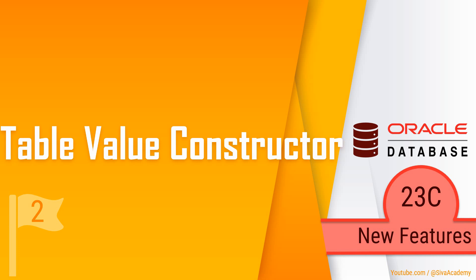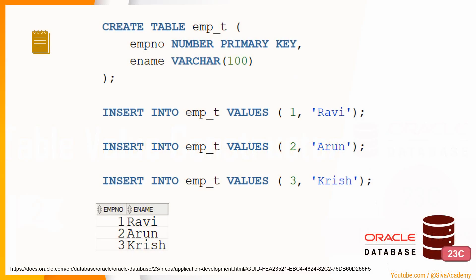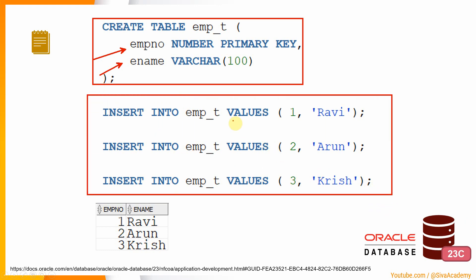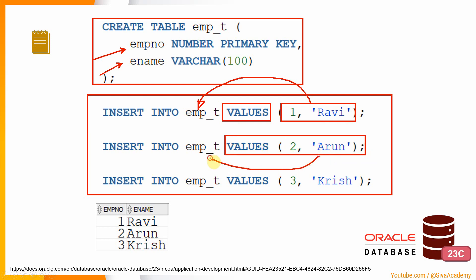Before getting into the Oracle documentation and examples with respect to this feature, let us see a small example with respect to a simple insert statement. Here, I am trying to create a table called emp_t with two columns, employee number and ename, and I want to insert three employees into this table. So obviously we'll write three insert statements. In this insert statement, we are using a keyword called VALUES, and this VALUES clause will help us to populate one row of data into this table.